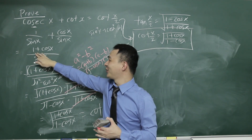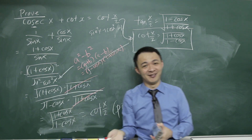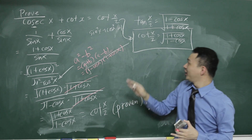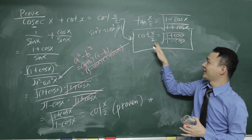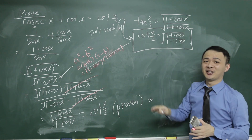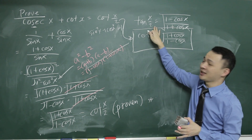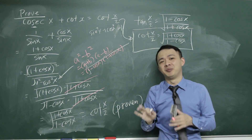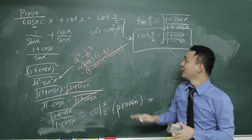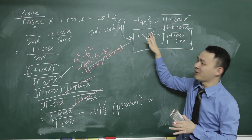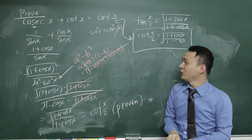Another key thing: you need to know you can add the square and square root to 1 plus cos x by yourself. If you already know what cotangent half x looks like, it's not hard to figure out. If you're a STPM student, I don't think this cotangent half x formula is in your textbook and it's not given in the exam paper either, so you kind of need to remember it.